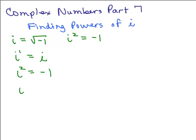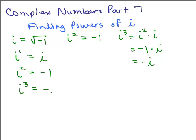What would i cubed be? i cubed could be written as i squared times i, using our laws of exponents. And i squared is negative 1, so this is negative i. So i cubed is negative i.